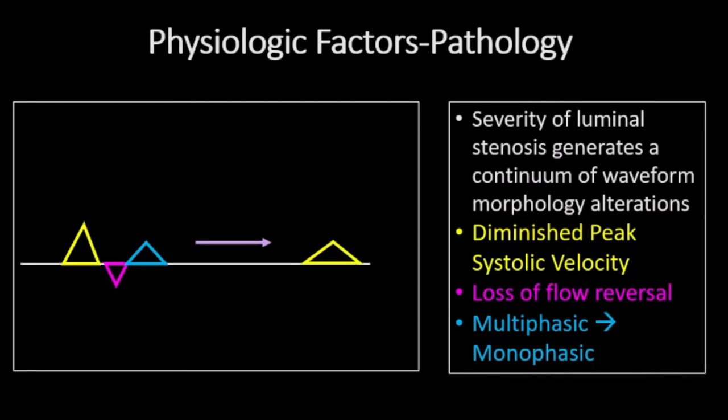In arterial pathologic states, the severity of luminal stenosis will result in a continuum of waveform morphology alterations. Diminished peak systolic velocity, often with sloping of the upstroke, loss of the normal early diastolic flow reversal, and then full transition to a low amplitude monophasic waveform can be expected.